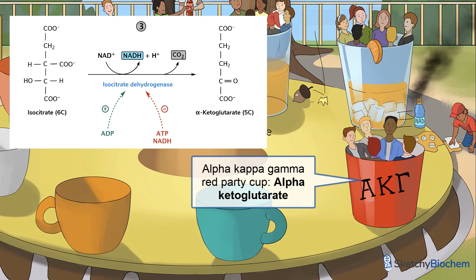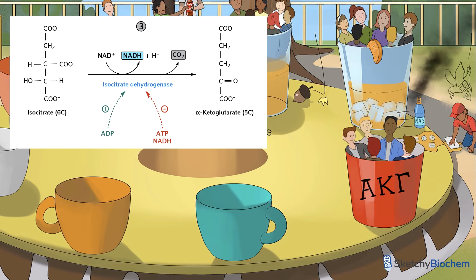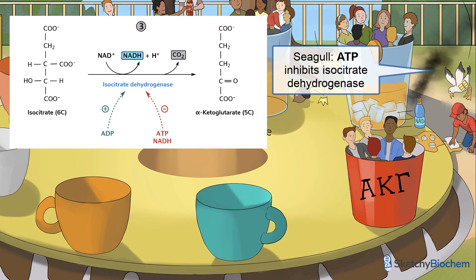We've got five frat bros in the next group who belong to the alpha-kappa-gamma fraternity and represent alpha-ketoglutarate. Another ATP-powered seagull is trying to attack our cast member, because ATP inhibits isocitrate dehydrogenase the same way it inhibits citrate synthase. If there's plenty of fuel available, the ratio of ATP over ADP will be high and we can slow down energy production by shutting down the TCA cycle.